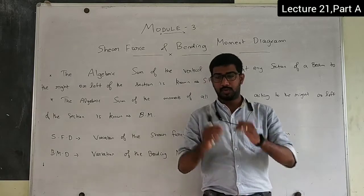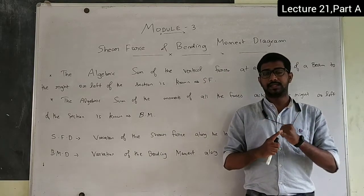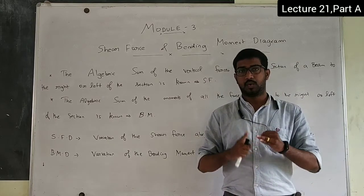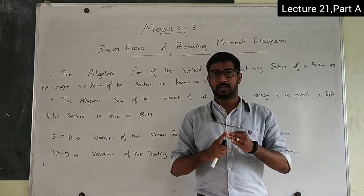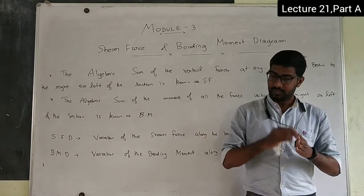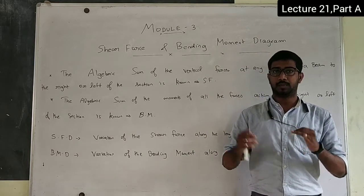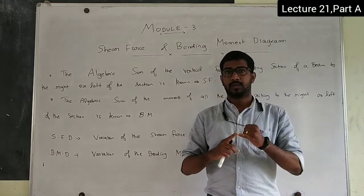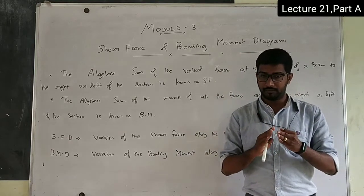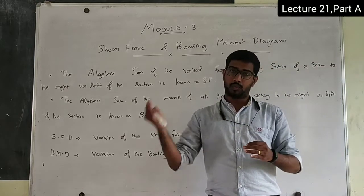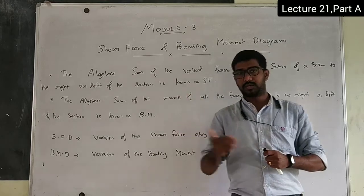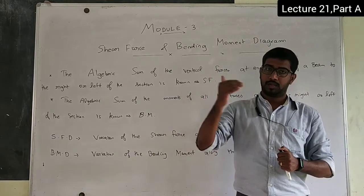We will start with the different types of beam. The first is the cantilever beam, then simply supported beam, overhanging beam, and continuous beam. When we have a beam, we can apply a point load, uniformly distributed load, or uniformly varying load. We study the beam using UDL and combinations of these load types.